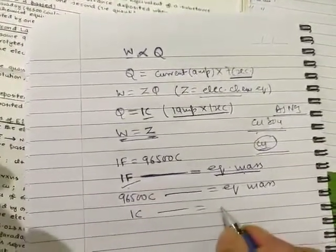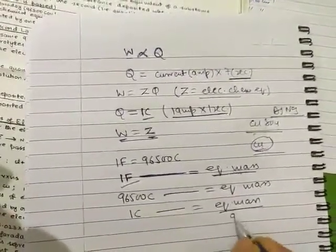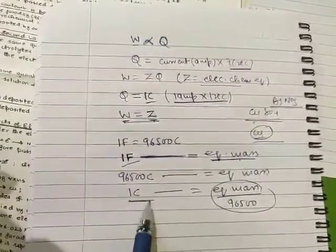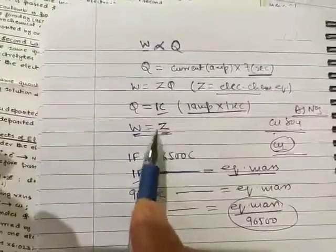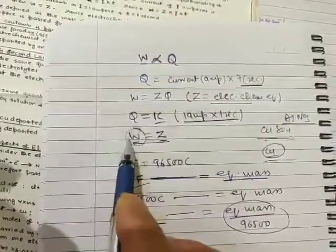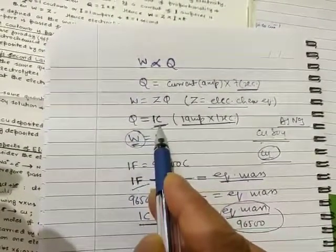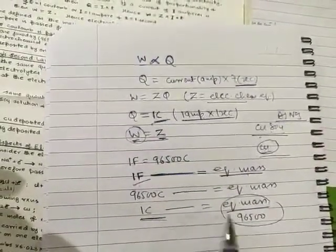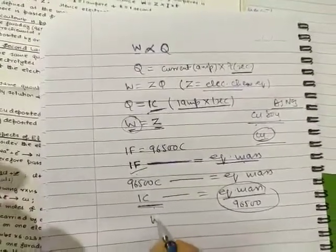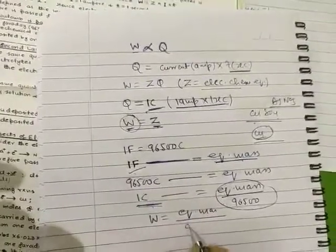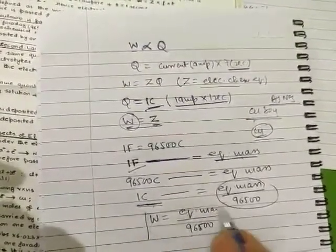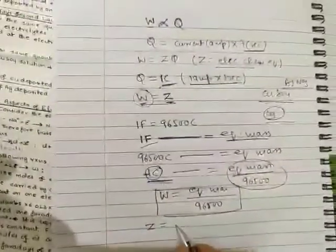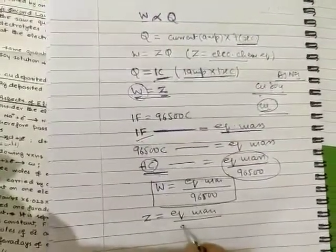So if I pass 96,500 coulombs, the mass of substance deposited equals the equivalent mass. If I pass 1 coulomb, the mass deposited equals equivalent mass divided by 96,500. Now, what is this quantity? This is the mass of substance deposited when 1 coulomb of electricity is passed — which is exactly the definition of Z (electrochemical equivalent). Therefore, Z is equal to W when 1 coulomb is passed, meaning Z = equivalent mass divided by 96,500. With the help of this equation, we can find the electrochemical equivalent, provided we know the equivalent mass of the substance.